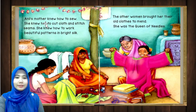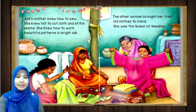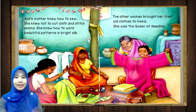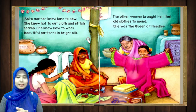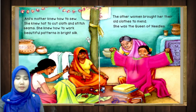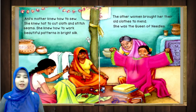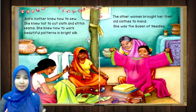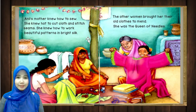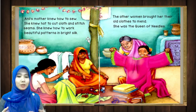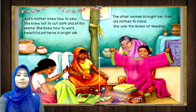Annual's mother knew how to sew. Annual's mother tahu macam mana nak menjahit. She knew how to cut cloth and stitch — dia tahu macam mana nak menggunting kain dan juga menjahit, stitch seams. She knew how to work beautiful patterns in bright silk. The other women brought her their old clothes to mend. She was the queen of needles — permaisuri of needles, jarum jahit. Maksudnya dia pandai menjahit.